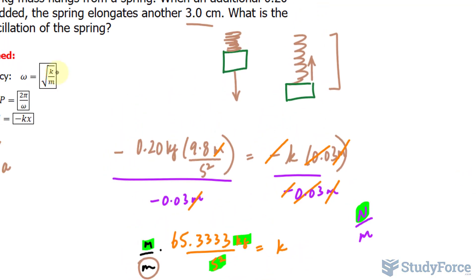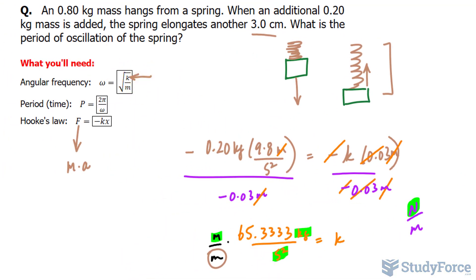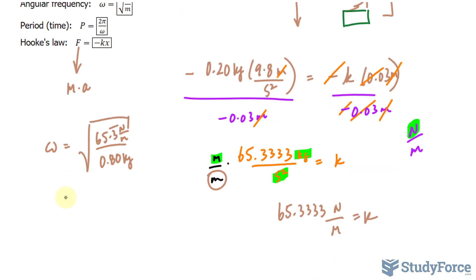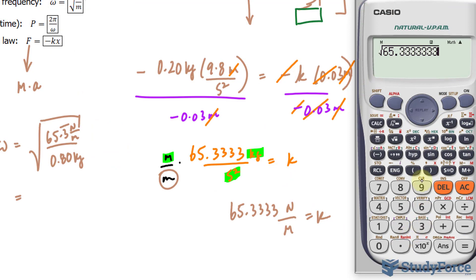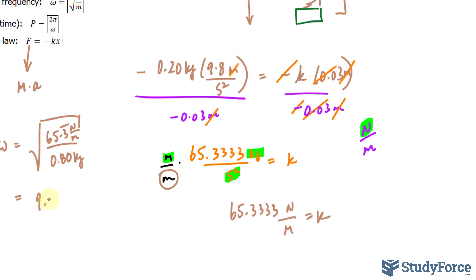I'll take this value and plug it into that formula. So I have the angular frequency is equal to the square root of 65.3 repeating over the mass of, the original mass being 0.80 kilograms. So that's newtons per meter and that's kilograms. And the units for angular frequency are in seconds. So I don't need to do an analysis of the units here. 65.333, as many threes as you want, divided by 0.8. And we get roughly 9.036, and that is in seconds.